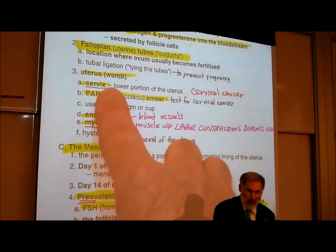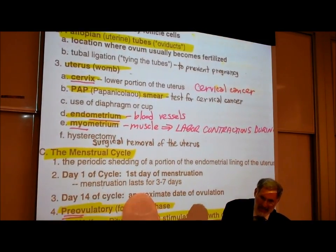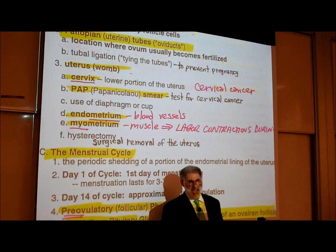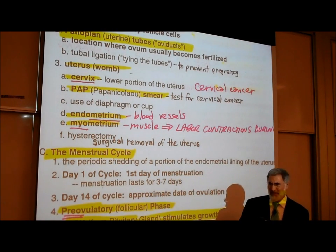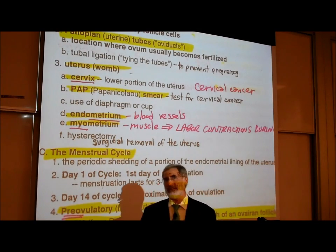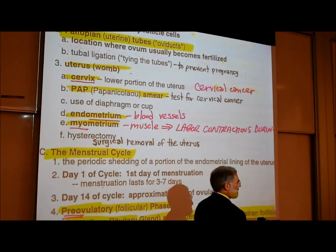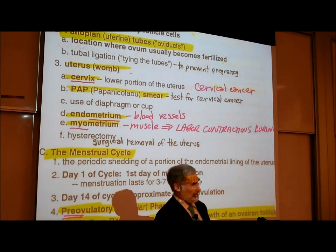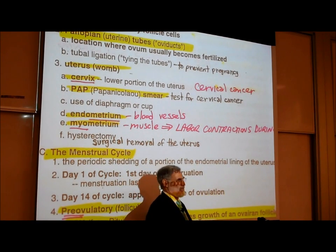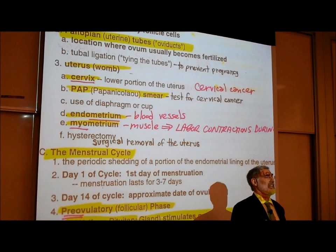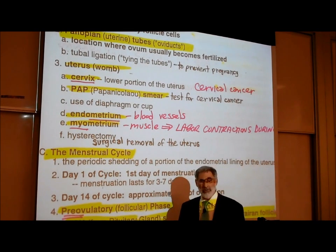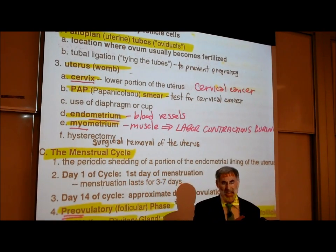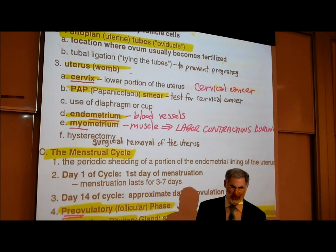The uterus, or womb, is of course where the baby develops. The bottom of the uterus is known as the cervix, which is significant because it is one of the more common places where cancer may occur in women — that's called cervical cancer. Last class we learned that one of the more common places where cancer occurs in men is the prostate gland. It's not just coincidence that cancer tends to occur in these reproductive structures.